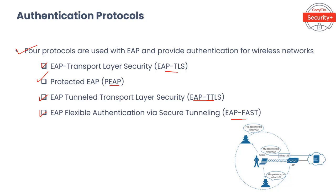EAP-FAST, or EAP Flexible Authentication via Secure Tunneling, is a proposed replacement to LEAP, the Lightweight Extensible Authentication Protocol, which has long been known to contain vulnerabilities. The goal of EAP-FAST is to provide a replacement that is also lightweight but secure. EAP-FAST works like PEAP but does not require client or server certificates; instead it uses a Protected Access Credential (PAC), which is essentially a shared secret between the client and the authentication server to establish a tunnel in which authentication is performed.